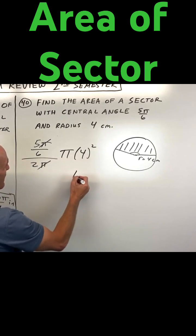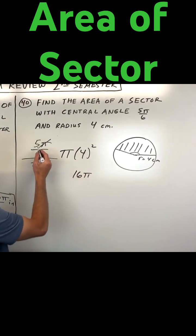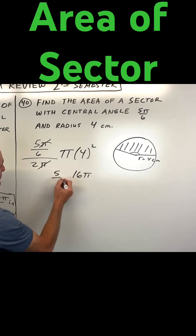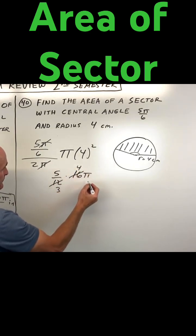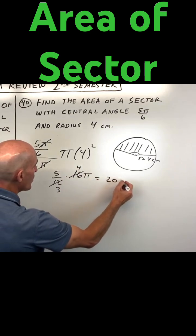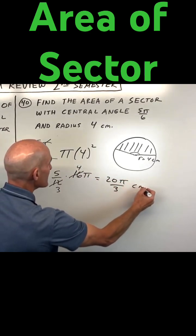Here we get 16 pi, and here we get 5 twelfths. So this is like multiplying by 5 twelfths, so we can reduce down a little bit further. 4 goes into 12 three times, 4 goes into 16 four times. So this is coming out to 20 pi over 3 centimeters.